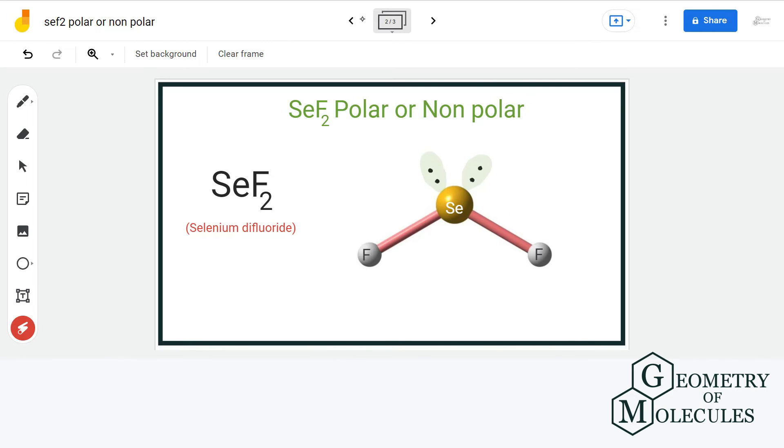As the structure is not symmetrical in nature, the dipole moment also won't get cancelled out. And if there were no lone pairs here, then the structure would have been linear and the net dipole moment would have been zero.